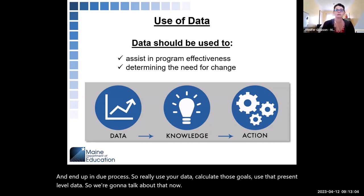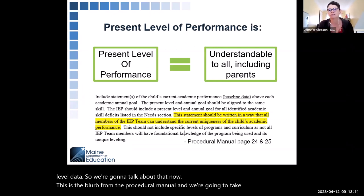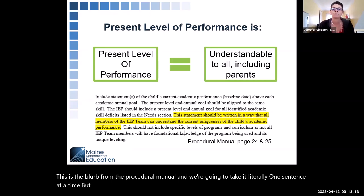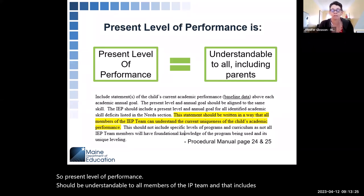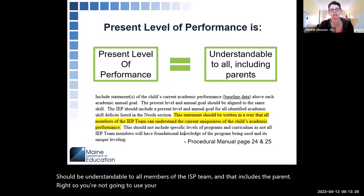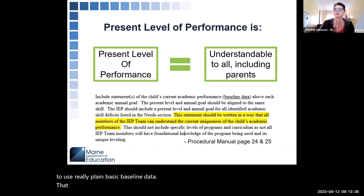This is the blurb from the procedural manual, and we're going to take it one sentence at a time. Present level of performance should be understandable to all members of the IEP team — and that includes the parent. So you're not going to use standard scores; you're going to use really plain, basic baseline data that is understandable to all.